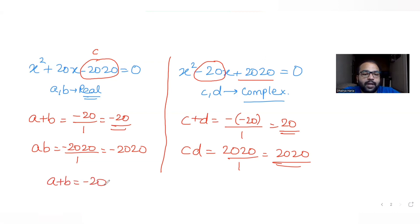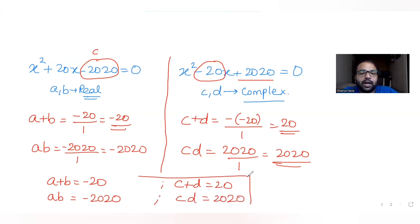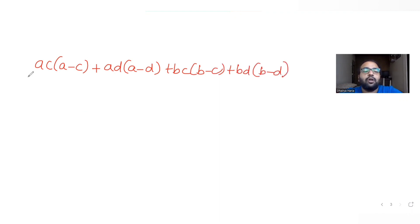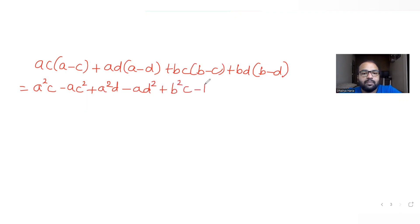So we have four conditions: a + b = -20, a·b = -2020, c + d = 20, and c·d = 2020. Now let's expand the expression: ac(a - c) + ad(a - d) + bc(b - c) + bd(b - d) = a²c - ac² + a²d - ad² + b²c - bc² + b²d - bd².